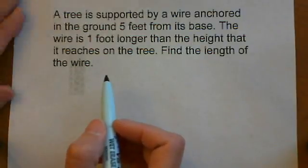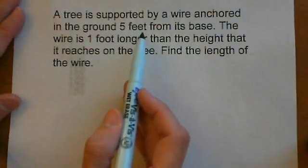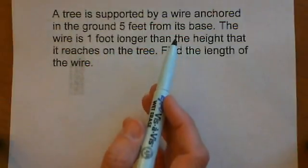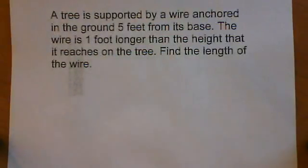A tree is supported by a wire anchored in the ground 5 feet from its base. The wire is 1 foot longer than the height that it reaches on the tree. Find the length of the wire.